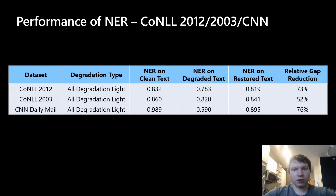This table shows the result of the action prediction model on the downstream task of NER. The first row shows the results on the in-domain CoNLL dataset. Notice how the NER accuracy on the degraded text drops down, and our model is able to restore up to 73% of the gap. The last line shows the result on the out-of-domain CNN dataset. The drop in performance here is even higher, but our model is able to successfully bring up the NER accuracy from 0.59 to 0.89.